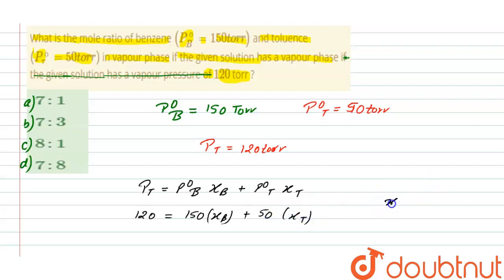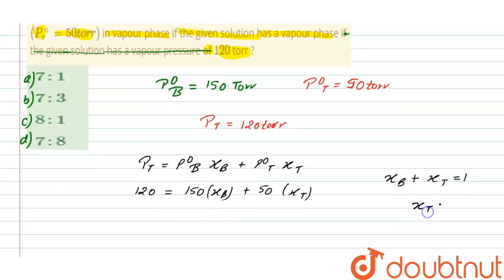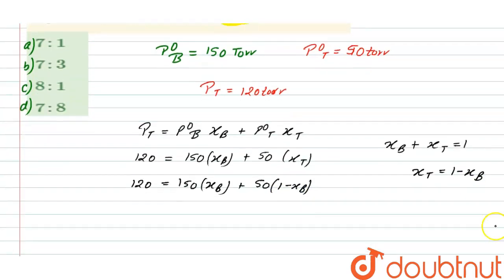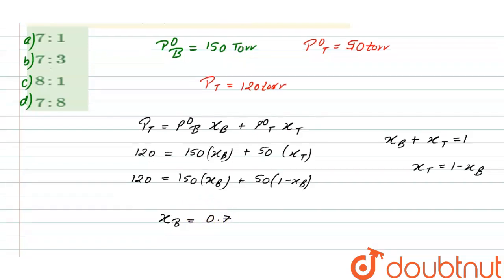We know that x_B + x_T = 1, so x_T = 1 − x_B. Putting this into the equation: 120 = 150·x_B + 50·(1 − x_B). Solving this equation, we get x_B = 0.7. This is the mole fraction of benzene in the liquid phase.